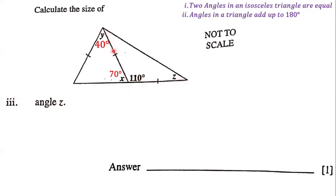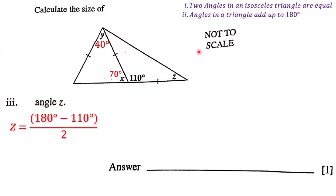We have two side lengths of the triangle that are equal, so we're dealing with an isosceles triangle. Since we're dealing with an isosceles triangle, not only are the two sides equal, but the two angles are also equal. Both angles are Z. To find angle Z, we take 180 minus 110, because angles in a triangle add up to 180 degrees. 180 minus 110 gives us 70 degrees.